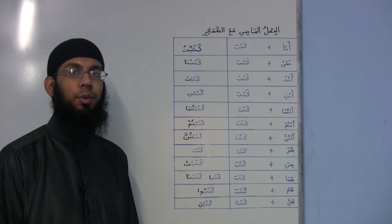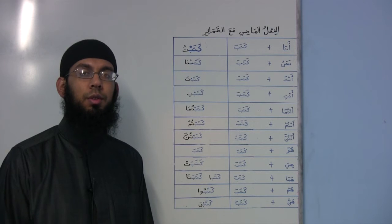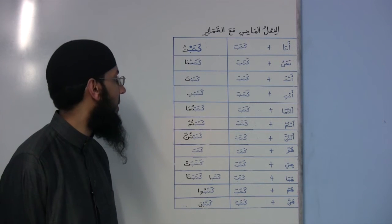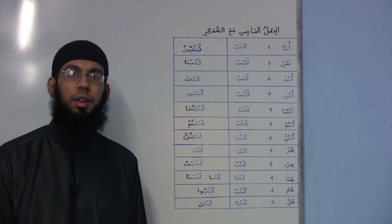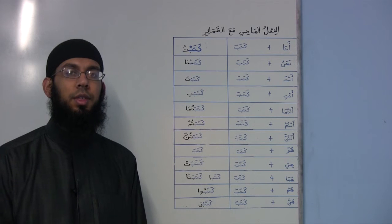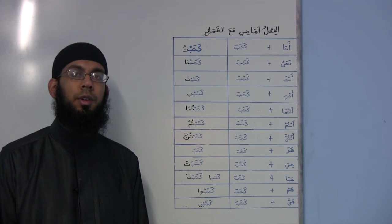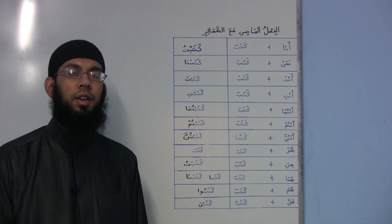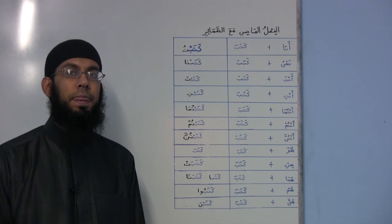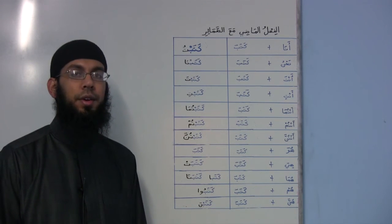This table can be used for different verbs, so it's not just restricted to kataba. The whole purpose of learning this table is so you can adapt the verbs. For example, the verb nazara: ana nazartu, anta nazartu, anti nazartu, antuma nazartuma, antum nazartum, antunna nazartunna, howa nazara, hiya nazarat, huma nazara / nazarata, hum nazaru, hunna nazarna.